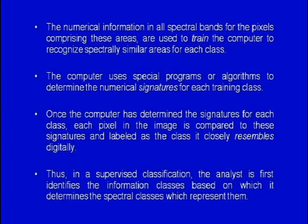The computer uses special programs or algorithms to determine the numerical signatures for each training class. Once the computer has determined the signatures of each training class, each pixel in the image is compared to these signatures and labeled as the class it most closely resembles. Thus, in supervised classification, the analyst first identifies the information class and then determines the spectral classes which represent them.